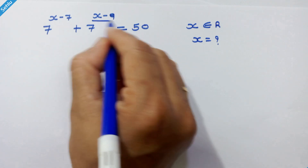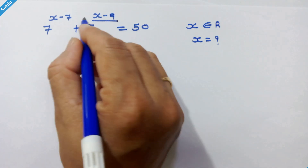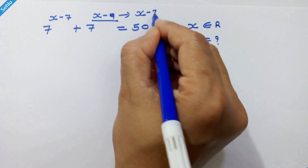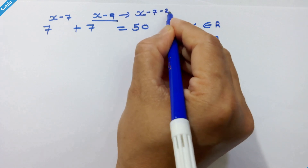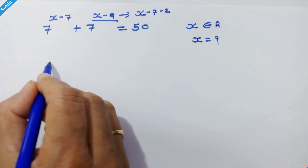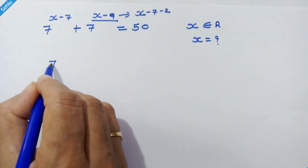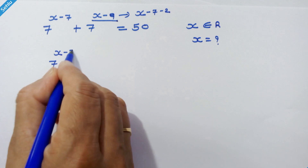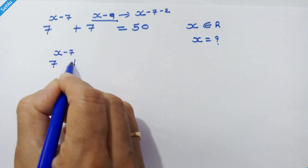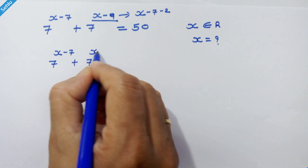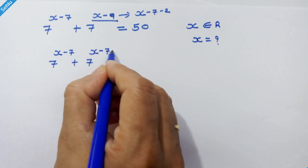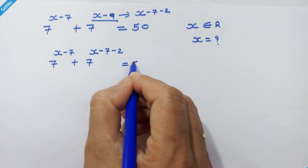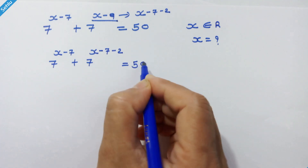First we will focus on this x minus 9. It can be written as x minus 7 minus 2. So here we can write 7 raised to x minus 7 plus 7 raised to x minus 7 minus 2 is equal to 50.